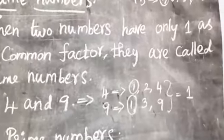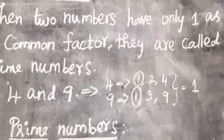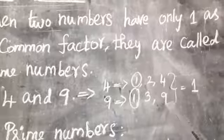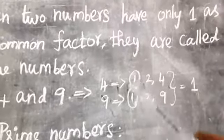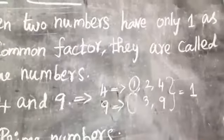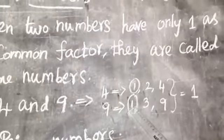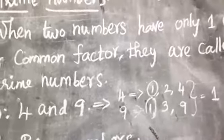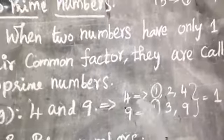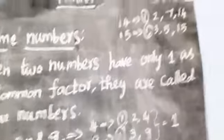Then the factors of 9 are 1, 3, 9. So the common factor of 4 and 9 is 1. So 4 and 9 are co-prime numbers.